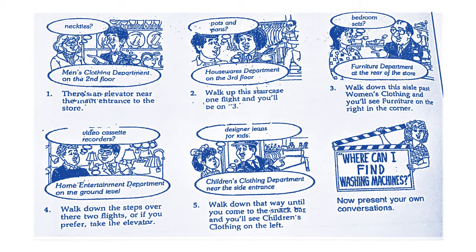Number Three — we have bedroom sets, يعني أطقم النوم. They are in the furniture department at the rear of the store — يعني خلف، at the back of the store. Walk down this aisle — يعني هذا الممر — past women's clothing, and you will see furniture on the right, in the corner. يعني في الزاوية، في الcorner.